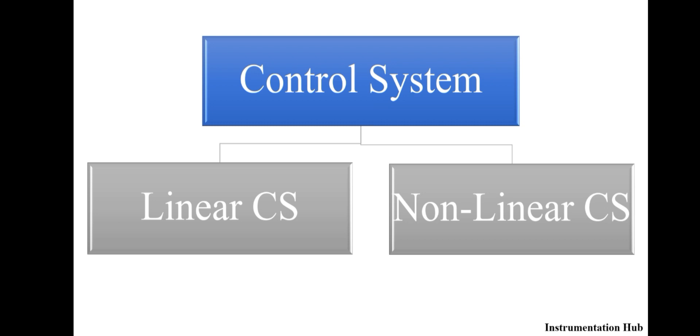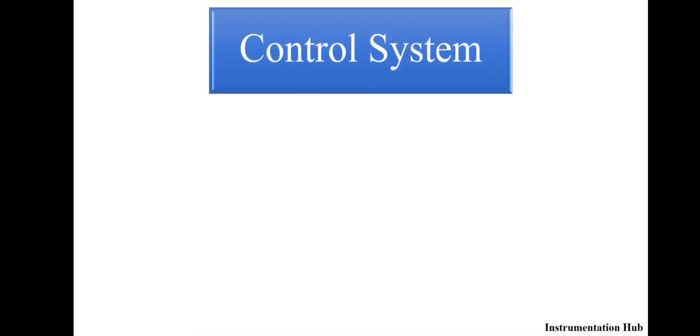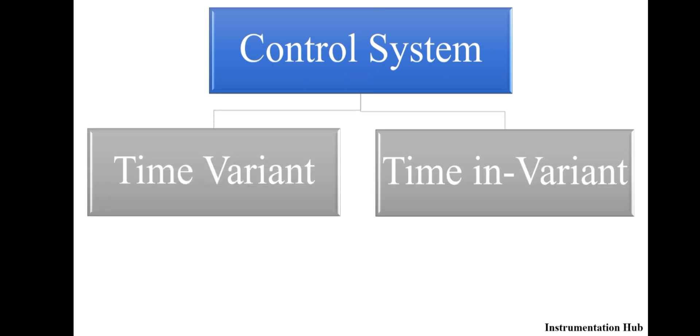If you want to learn more about these two classifications, you can review previous videos. Okay, so as I said, there is a third type of control system or third classification of control systems, that is time-variant systems and time-invariant systems. We will see more about it.